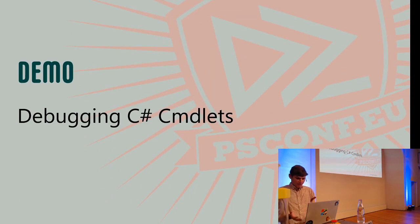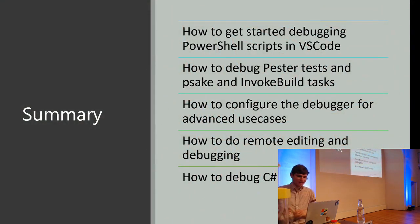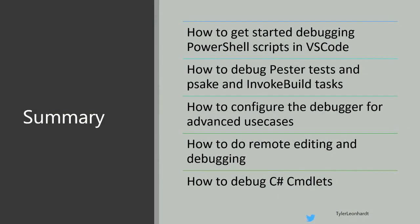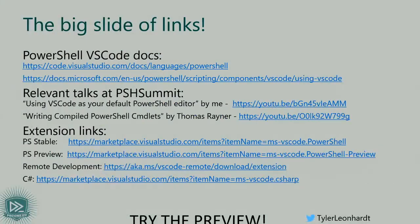To summarize, we covered how to get started with debugging PowerShell scripts in VS Code, how to debug Pester tests, how to configure the debugger for advanced use cases, how to do remote editing and debugging, and how to debug C# cmdlets. There's a big slide of links including Thomas's talk and my 'Using VS Code as Your Default PowerShell Editor' talk, PowerShell VS Code docs, and links to all the extensions mentioned. Thank you all!